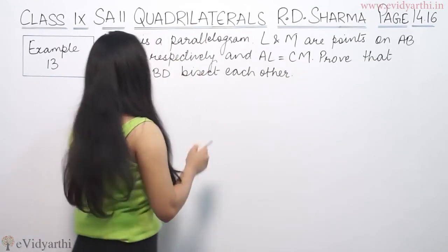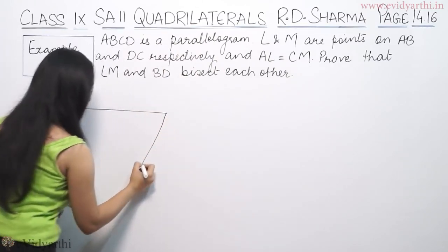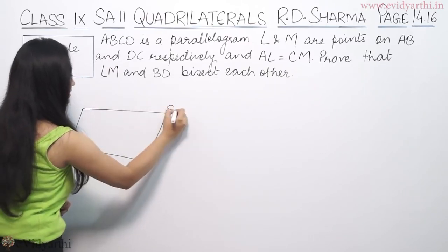So ABCD is a parallelogram. This is A, B, C, D.